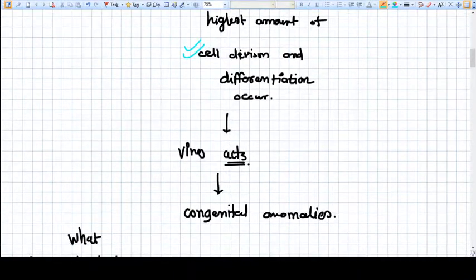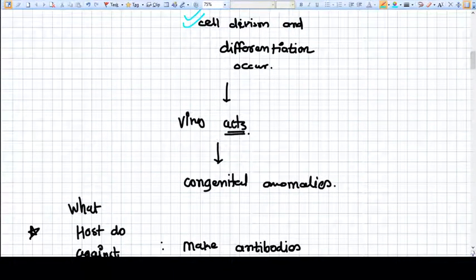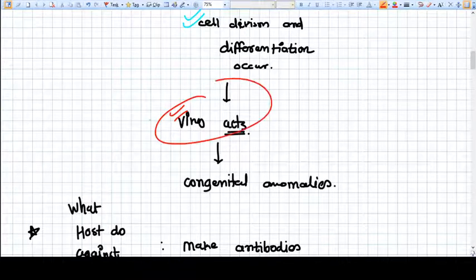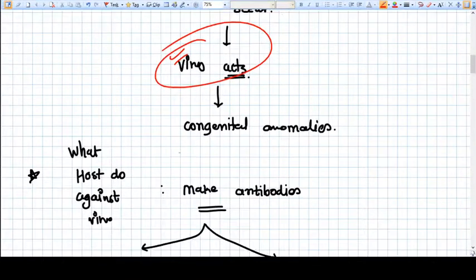And when any virus infection occurs in this time period, it will disrupt the genetic process going on and this will lead to congenital anomalies.